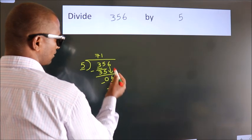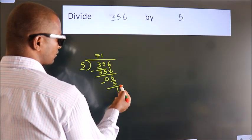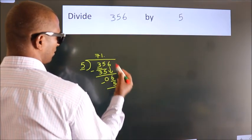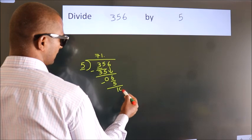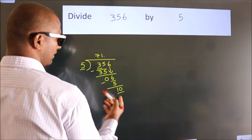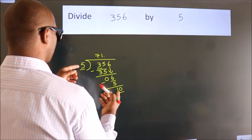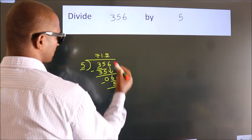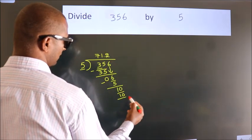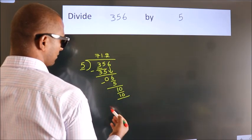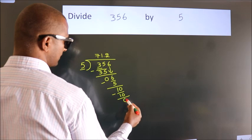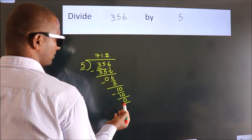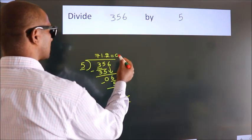After this, there are no more numbers to bring down. So what we do is put a decimal point and take 0, making it 10. When do we get 10 in the 5 times table? 5 twos are 10. Now we subtract and we get 0 — remainder 0. So this is our quotient: 71.2.